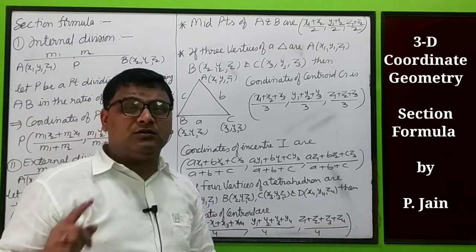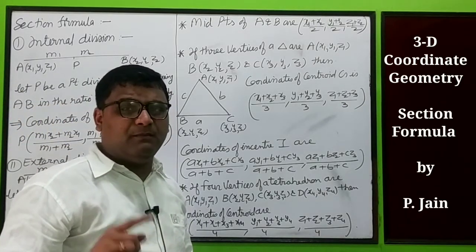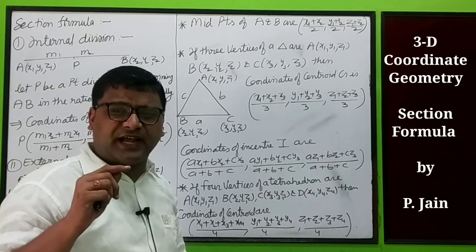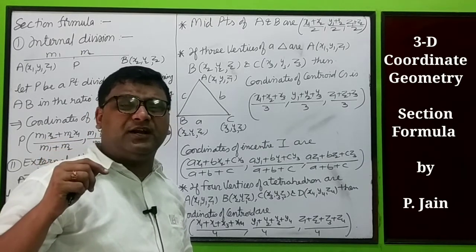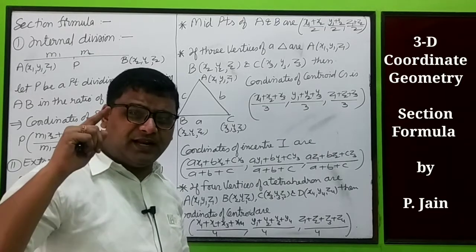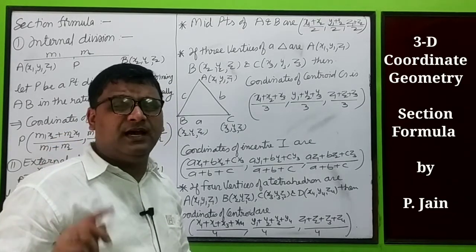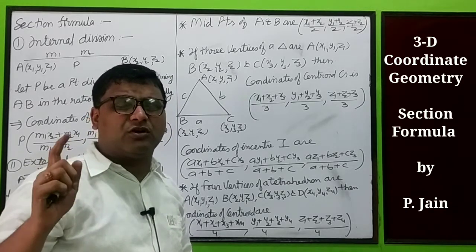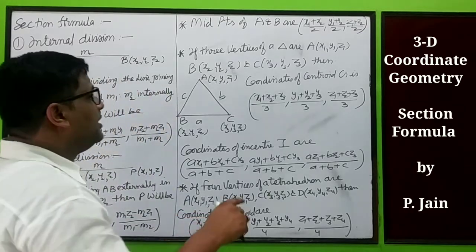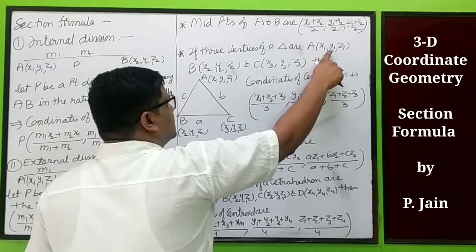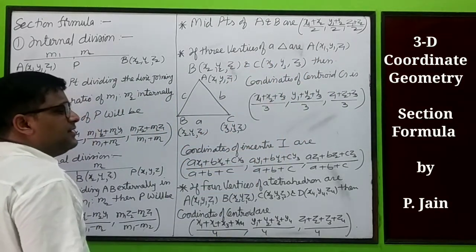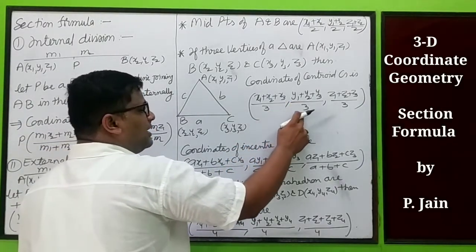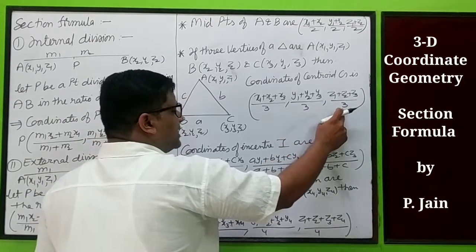Now we know that the median of a triangle is a line joining the vertex of a triangle to the midpoint of the opposite side. We know that the centroid divides the median in the ratio of 2 is to 1. So by that property, if the three vertices of a triangle are (x1,y1,z1), (x2,y2,z2), and (x3,y3,z3), then the coordinates of centroid G are ((x1+x2+x3)/3, (y1+y2+y3)/3, (z1+z2+z3)/3).